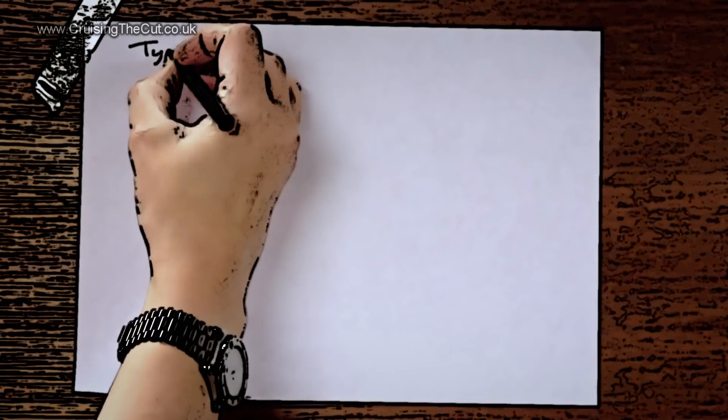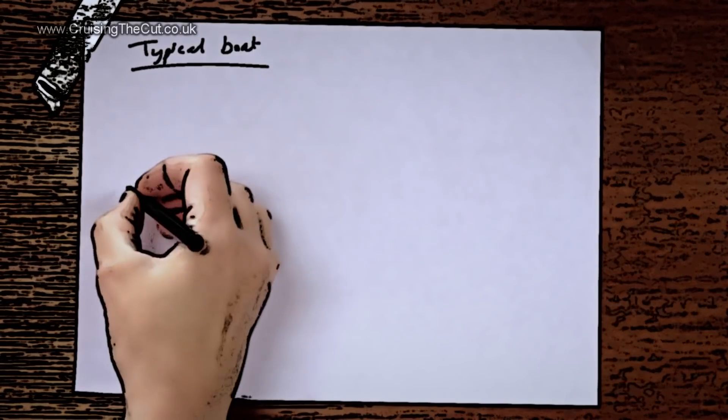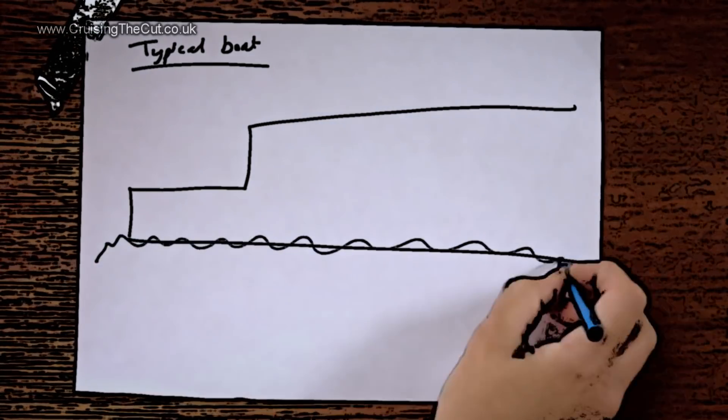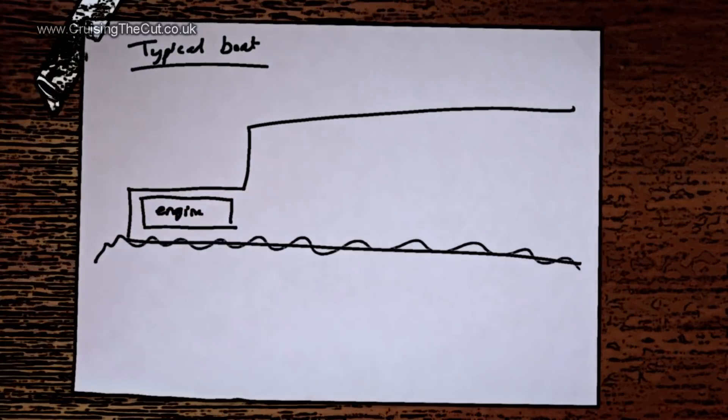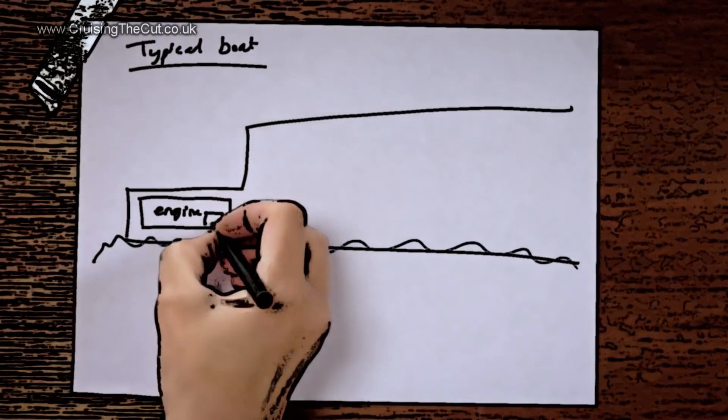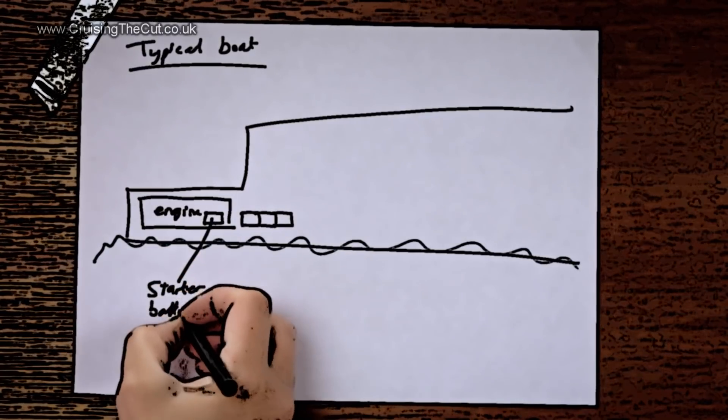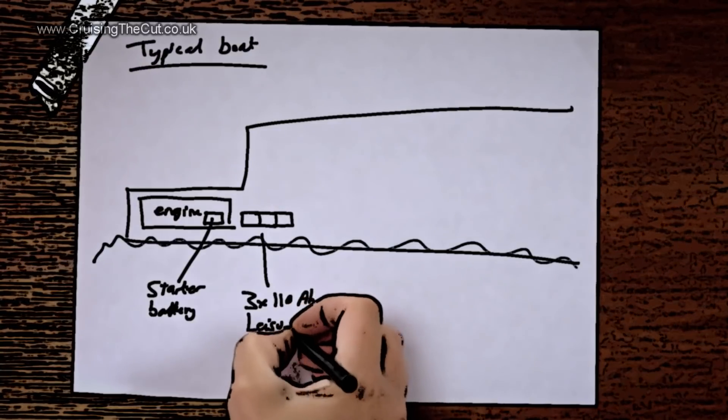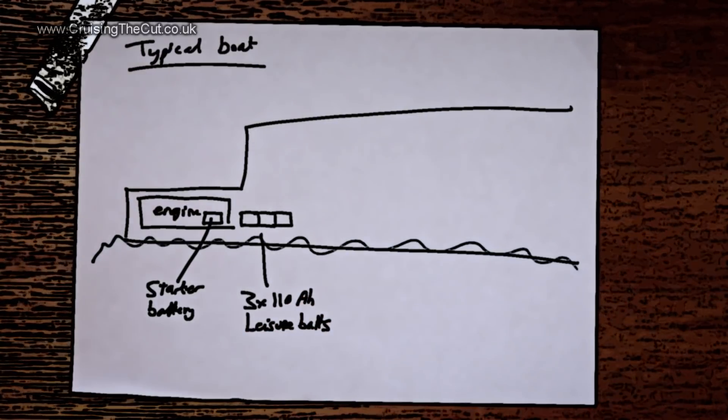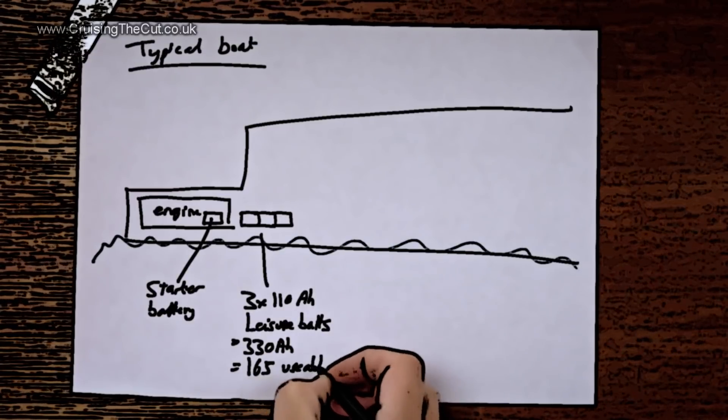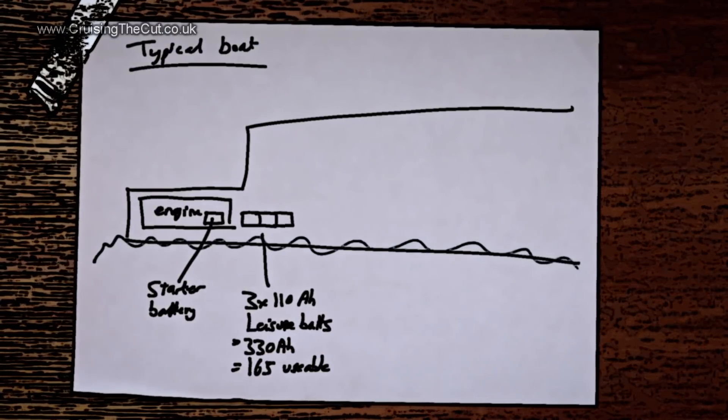If you haven't already got a big headache, let's take a look at a typical setup for a boat. You'll have your batteries - let's say a starter battery for the engine and a bank of three 110 amp hour, 12 volt leisure batteries. That's a total of 330 amp hours, of which only half remember - 165 amp hours - is actually usable before you need to recharge, though if you can do it sooner the batteries will be happier.